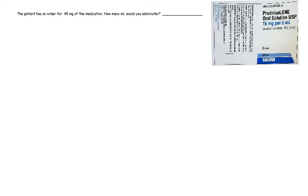The patient has an order for 45 milligrams of the medication. How many milliliters would you administer? So in order to solve this by ratio and proportion method, I'll do the linear first and we are going to look at the label.